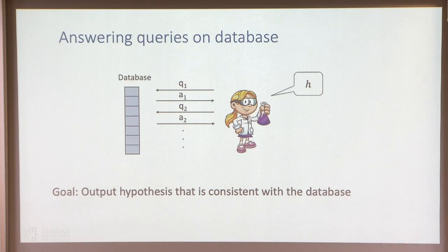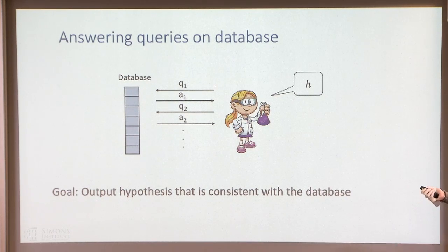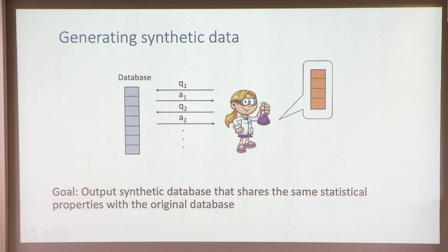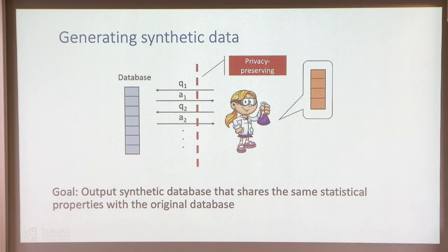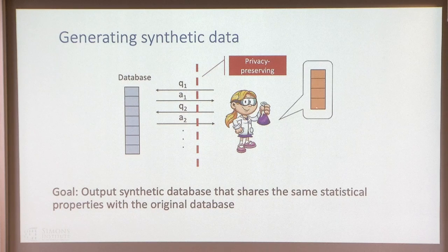So up until now, we have been thinking mostly about how we have some particular database and an analyst who wants to ask a bunch of queries about her data until she finds some hypothesis that fits the data. Now we're going to switch to thinking about something different: instead of outputting a hypothesis, she's going to produce a brand new database that hopefully shares the same broad statistical properties with the original database, with some kind of privacy-preserving barrier. I'll assume we all agree that differentially private data production is an important task.